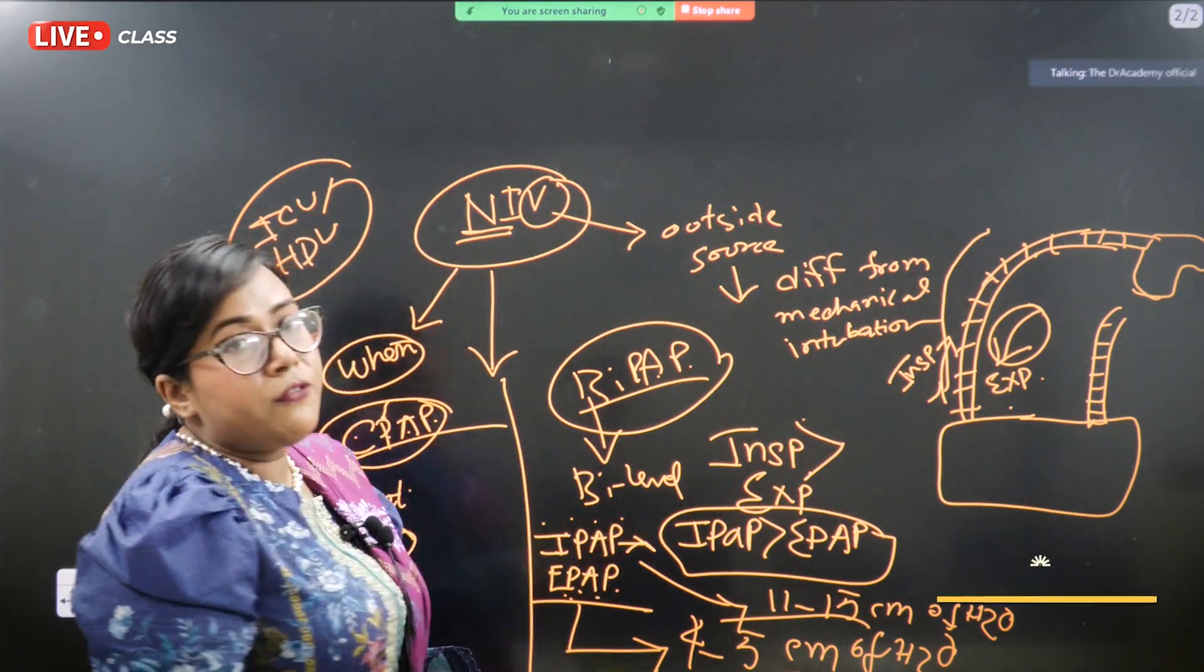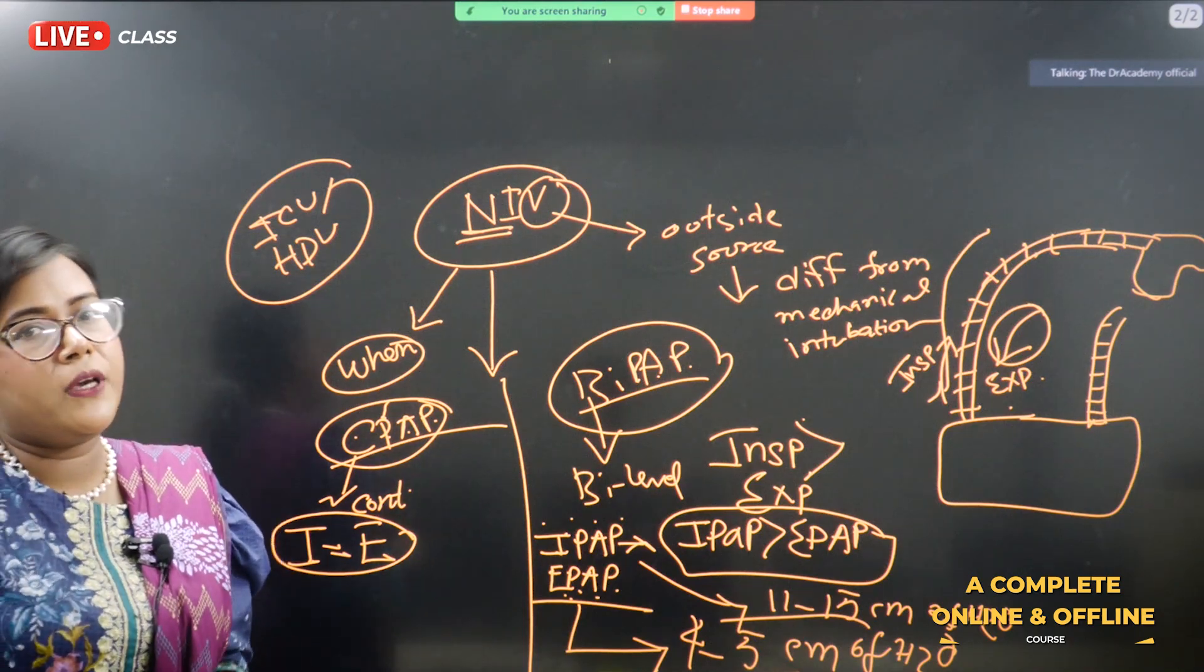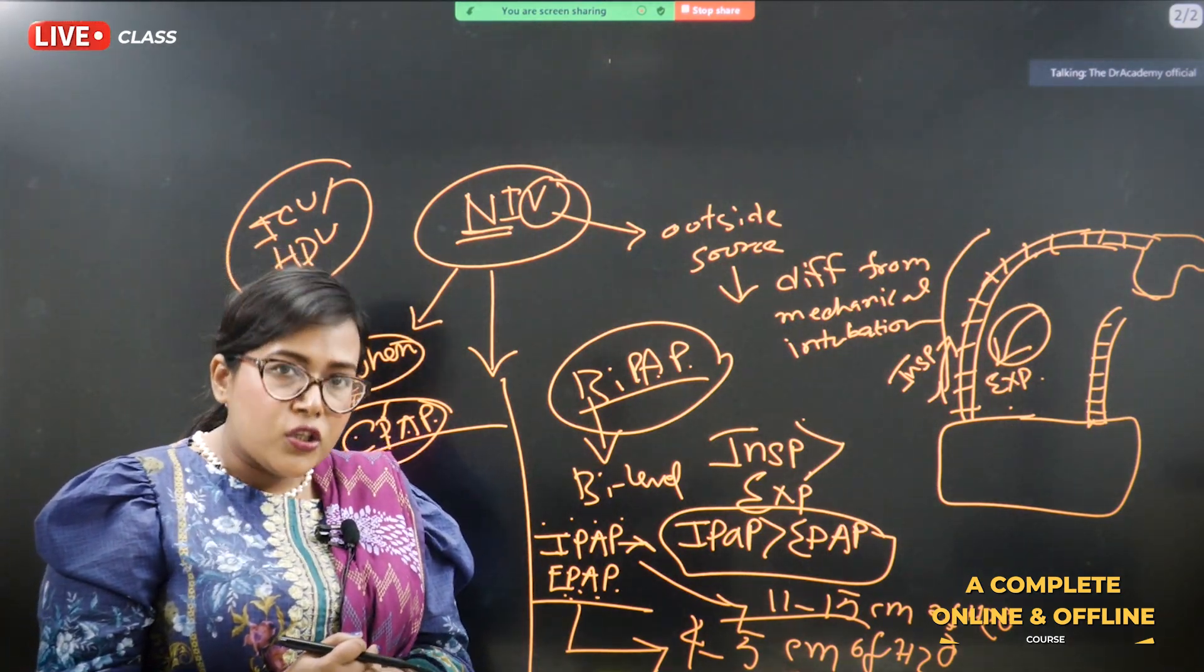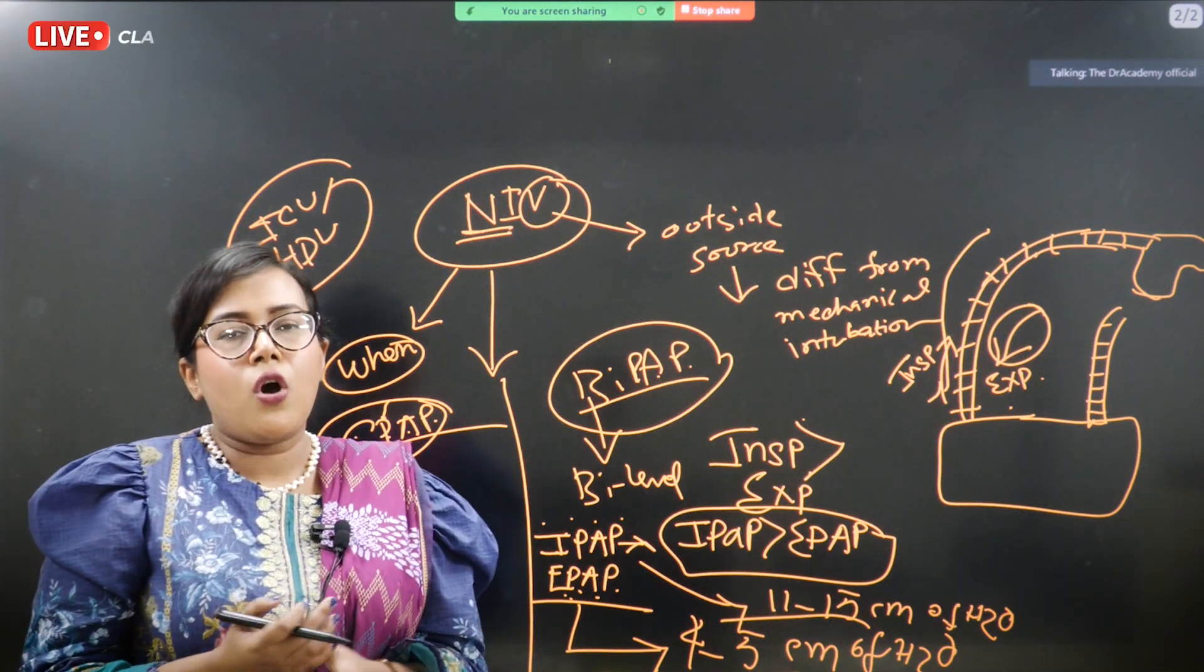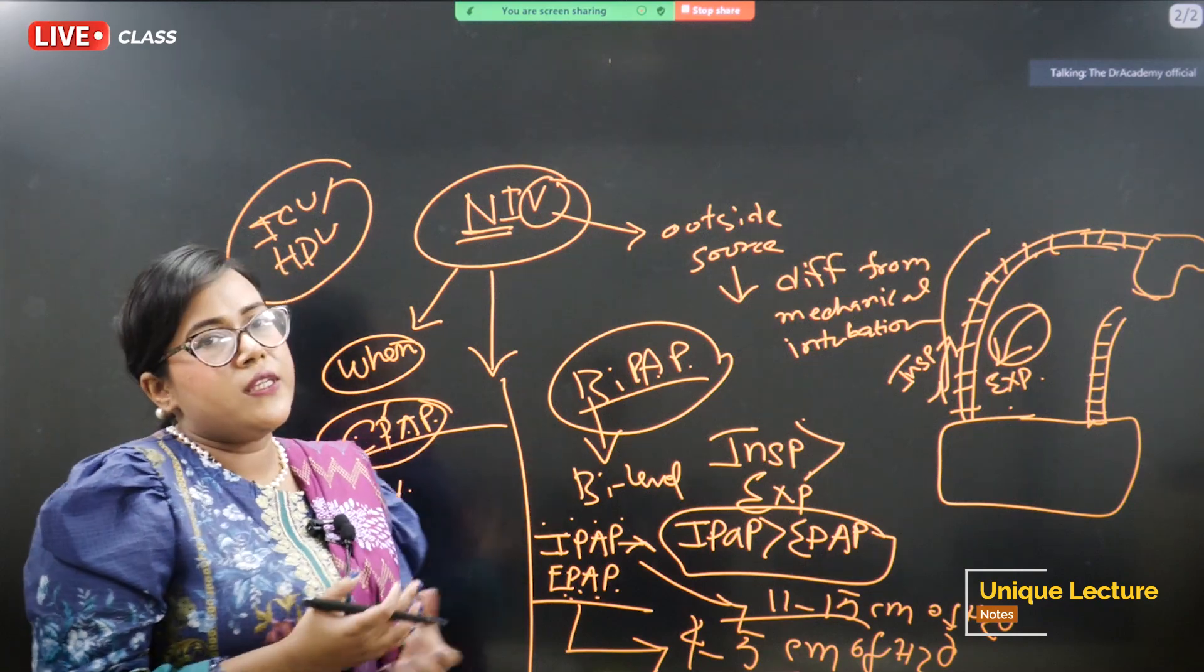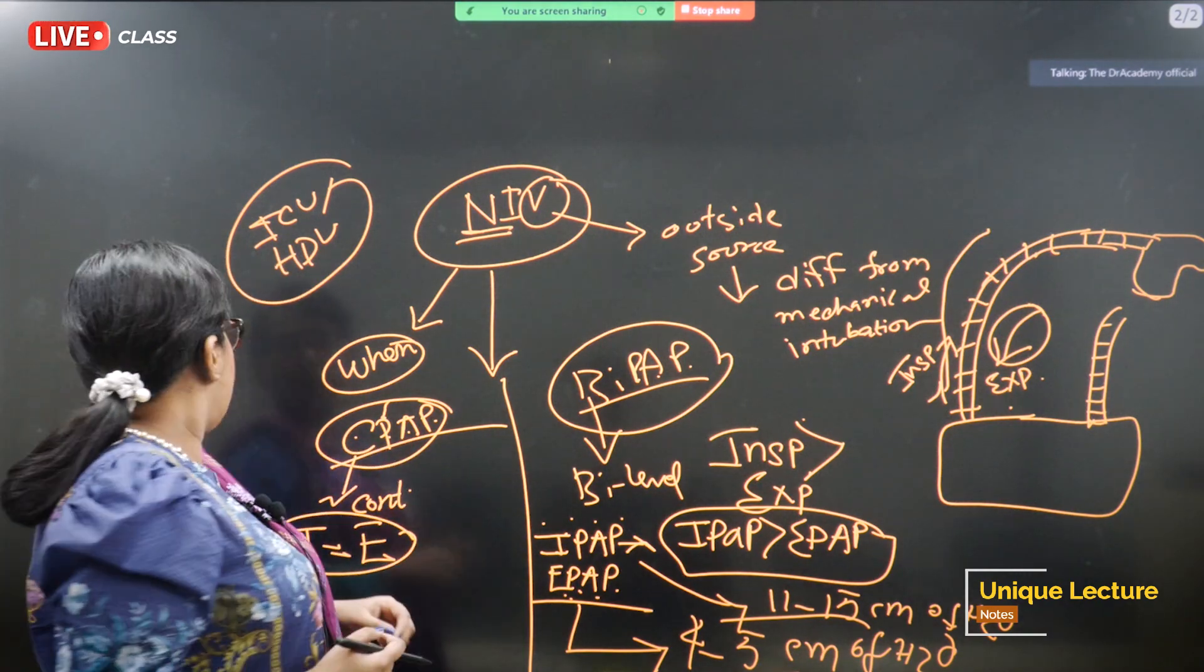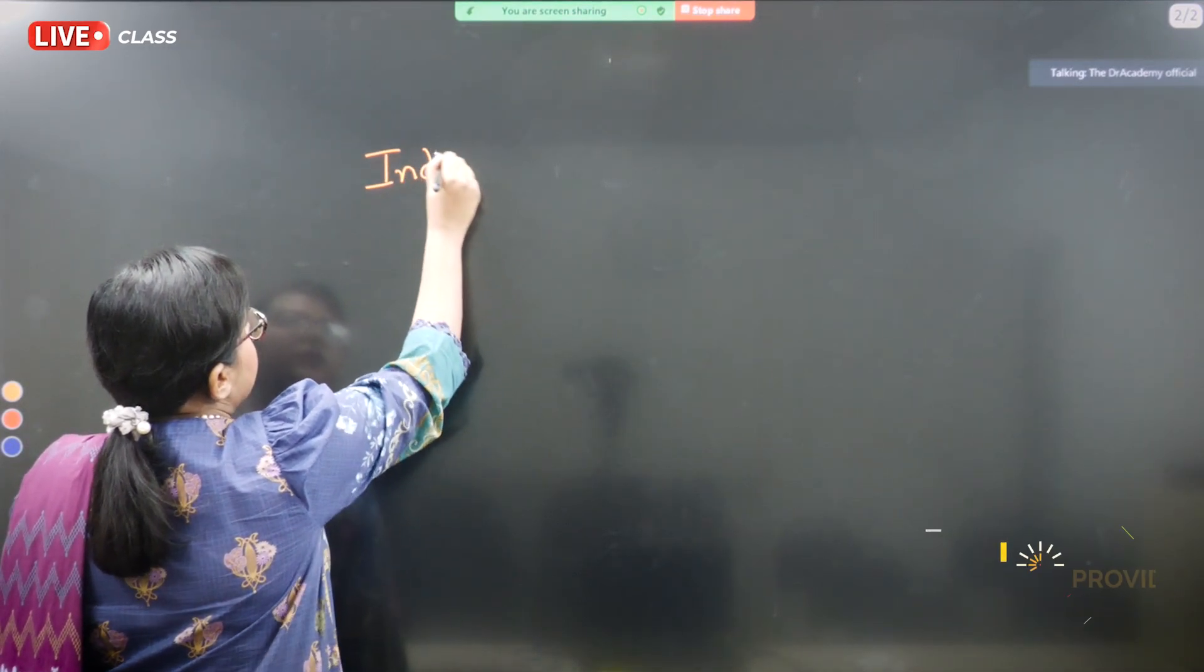So what are some of the indications of BiPAP? That is our main topic of discussion rather than the CPAP because we are discussing about the management of chronic obstructive pulmonary disease which often presents with type 2 respiratory failure or the condition itself is associated with carbon dioxide retention in the body. So the indications of non-invasive ventilation, this is important.